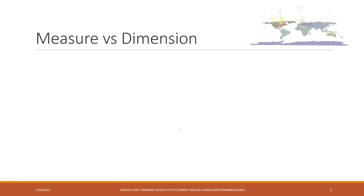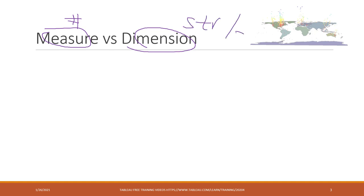First, the concept of measures and dimensions. Measures are quantitative data, like numbers. Dimensions are categorical data, like strings and also dates — dates are also one type of dimension data.